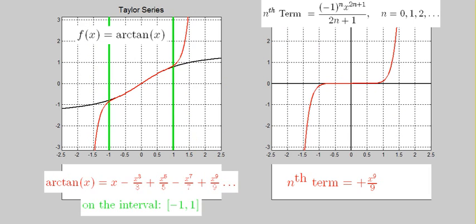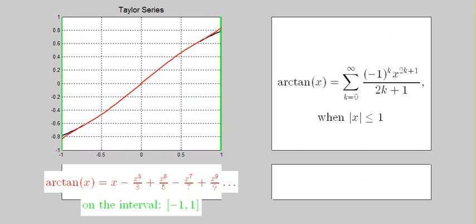The interval of convergence is from minus 1 to 1, including the endpoints. As we zoom in, note that there is almost no distinguishable difference between the red polynomial and the black arctan function.